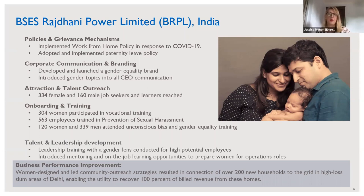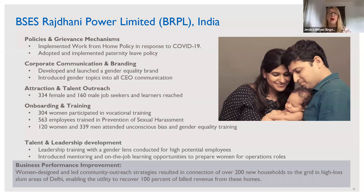BRPL also had significant challenges with revenue loss because of bills not being paid in certain communities. They implemented and tested an outreach strategy that deployed women customer service agents to develop one-to-one relationships with their bill payers. They had previously been sending men to collect bills, which was a challenge because women were often at home and didn't want to answer the door, or resulted in aggressive interactions. The women intentionally developed relationships with households, explained the importance of paying bills and the impacts on electricity prices, and were able to capture 100% of their bills revenue and also made new connections.